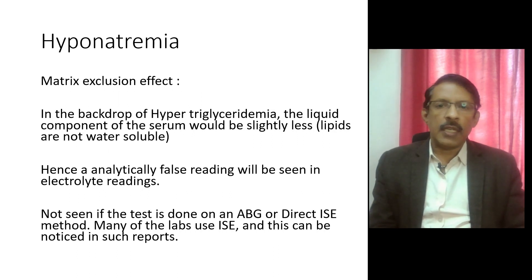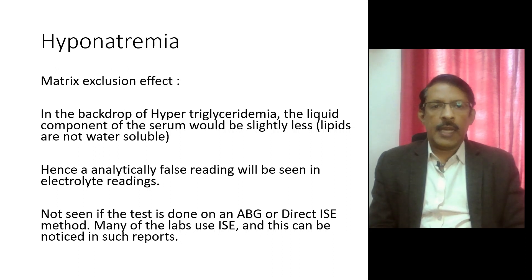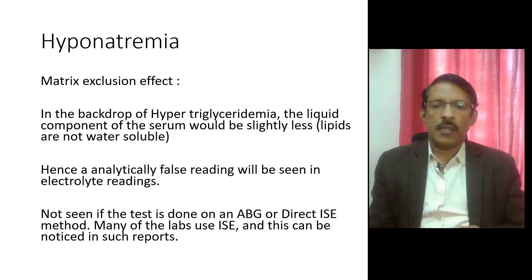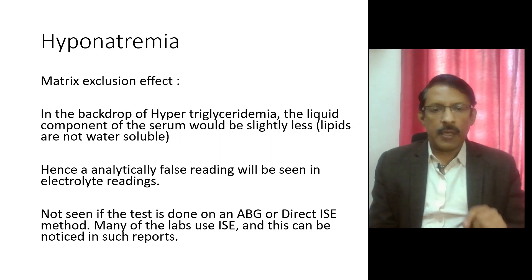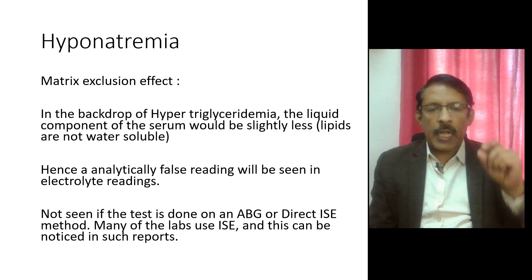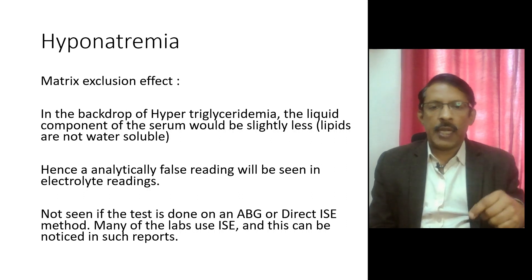Hyponatremia can also occur due to another condition called the matrix exclusion effect. There are two kinds of electrolyte analyzers in the lab: one called the direct ISE (ion sensitive electrode) and one which is the indirect ISE. Most labs usually have indirect ISE. The arterial blood gas analyzer, which also gives electrolyte levels, works by the direct ISE. The key difference is that in indirect ISE, the plasma or serum is diluted and then we estimate the electrolytes in the diluted version.